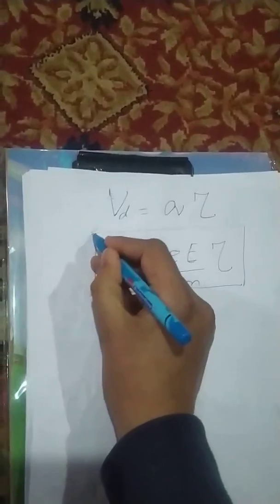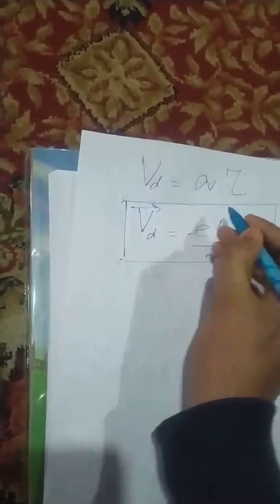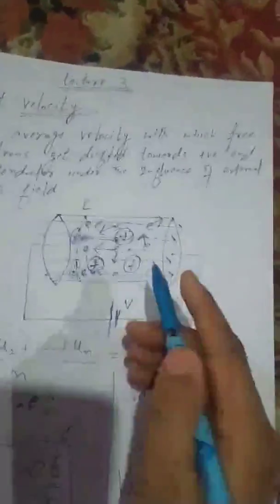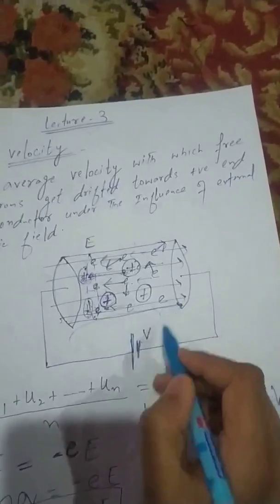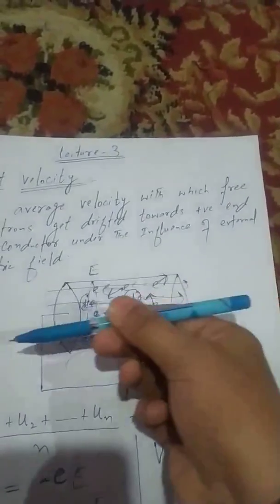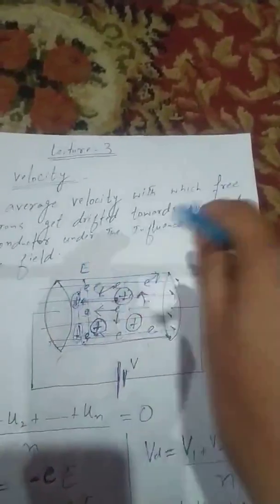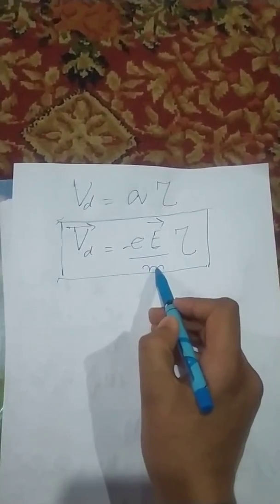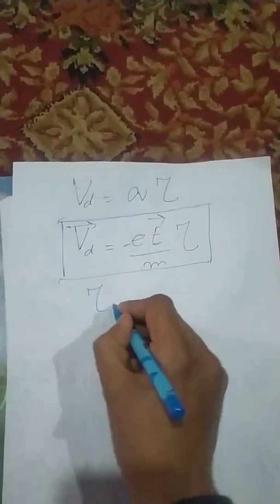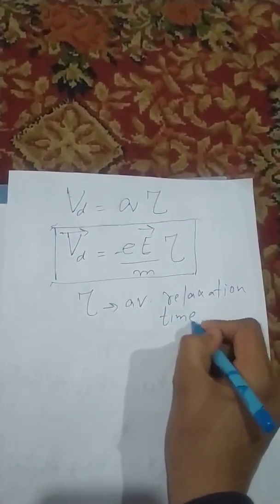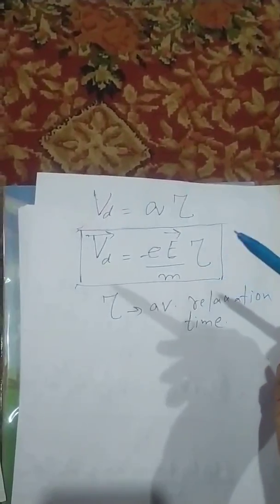In vector form, drift velocity and electric field are opposite in direction. The electric field is generated from the positive to negative terminal, so the electric field goes in one direction while electrons drift in the opposite direction. Therefore, drift velocity v_d = minus e·τ/m into E, where e is the charge of the electron, E is the applied electric field, m is the mass of the electron, and τ is the average relaxation time. Thank you.